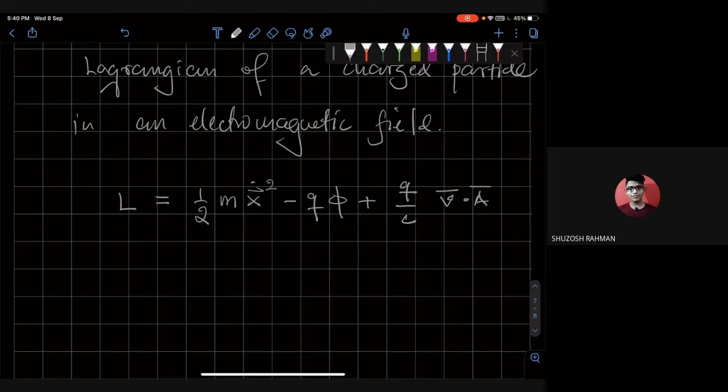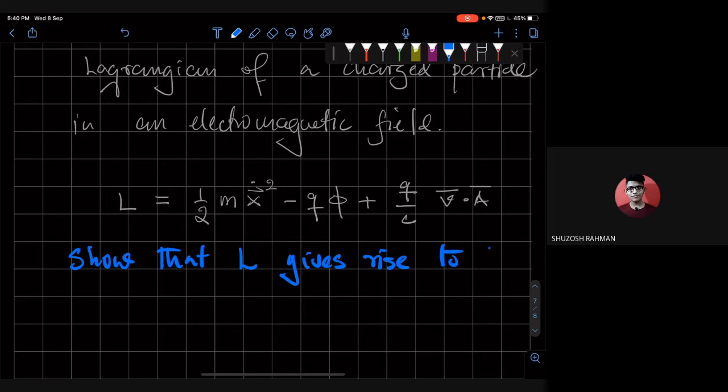So this is the Lagrangian that yields the Euler-Lagrange equation that we just saw. So you can show this, right? Show that L gives rise to the Lorentz force law.